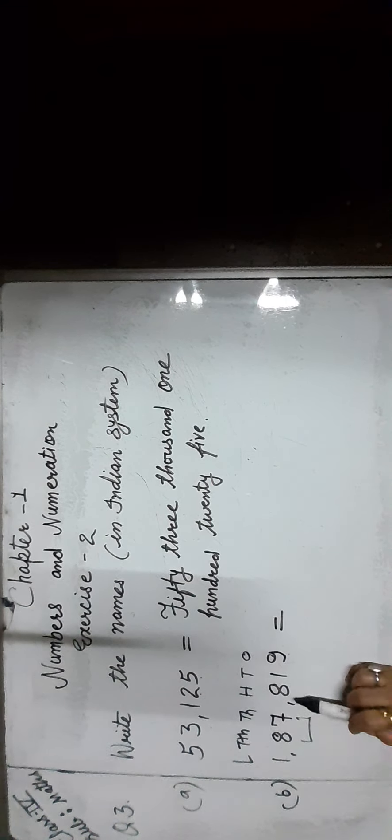Next number is 1,87,819. Let us check the position of each digit: 9 ones, 1 ten, 8 hundreds, 7 thousands, 8 ten-thousands, and 1 lakh. As you can see, 1 is in the lakh place. So we call it as 1 lakh 87,819.